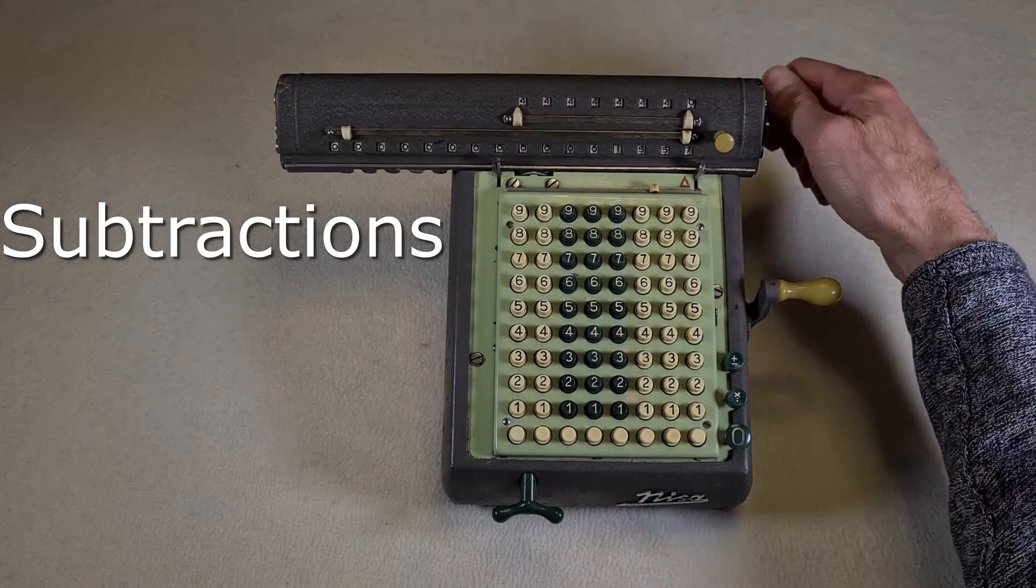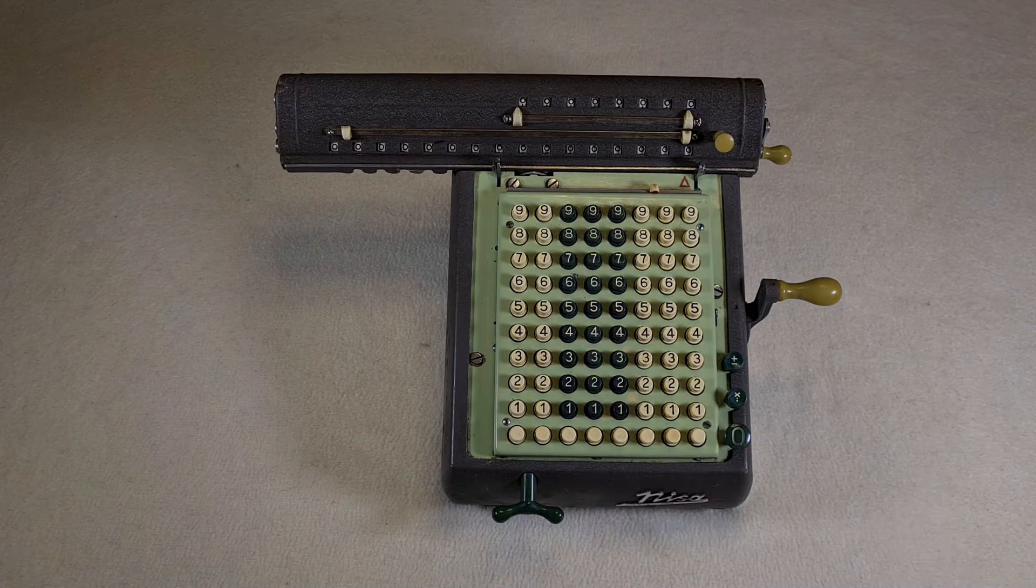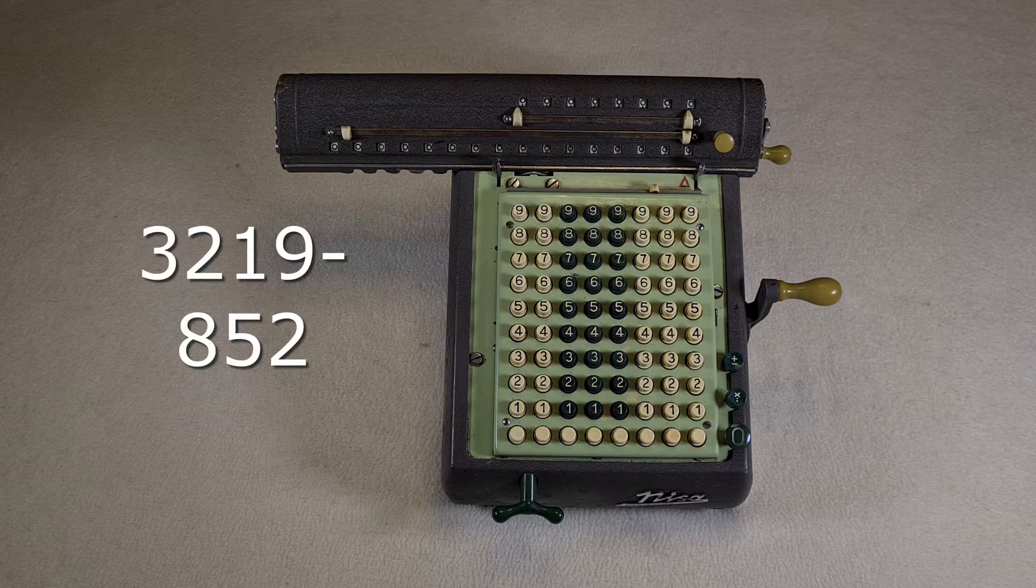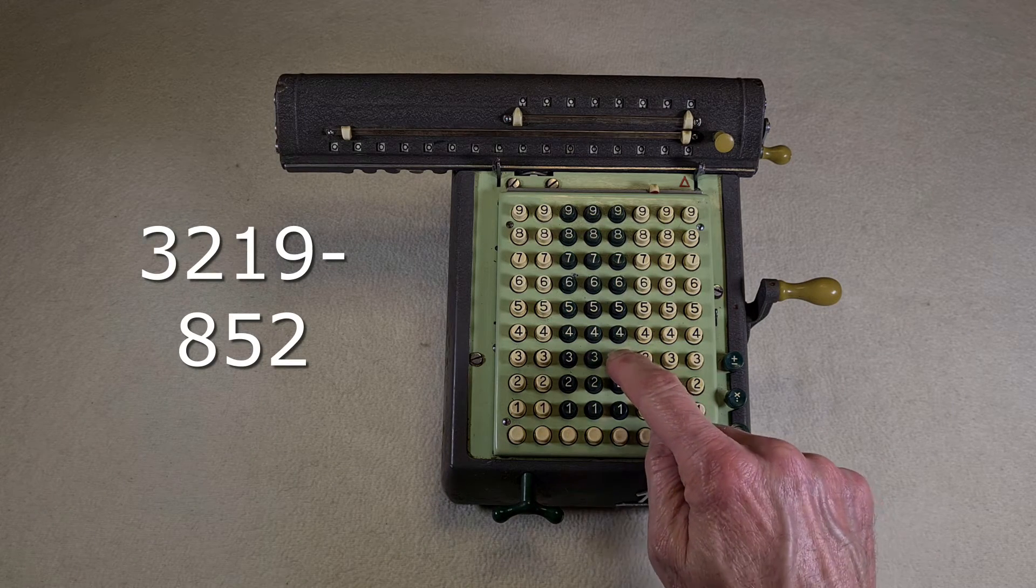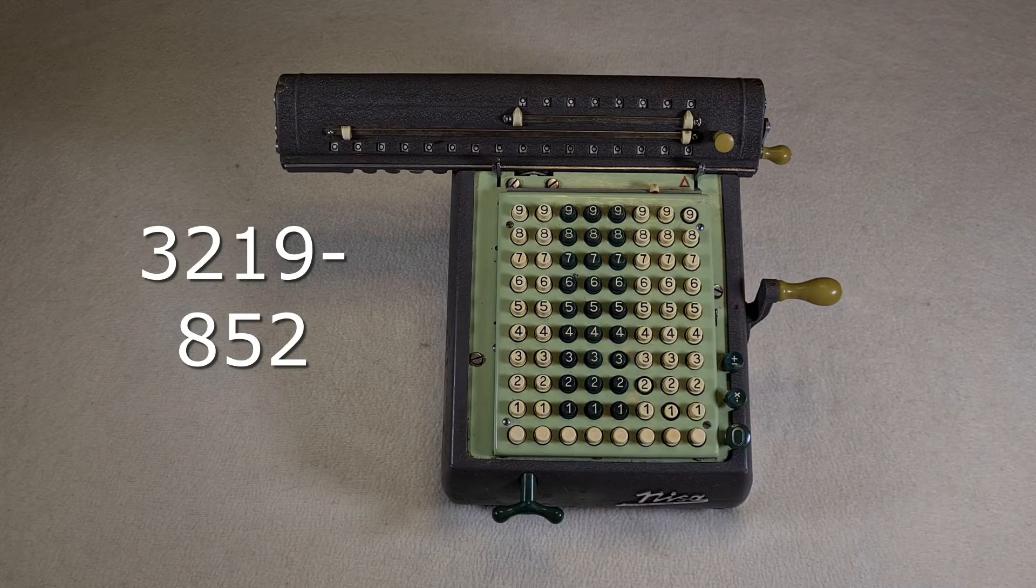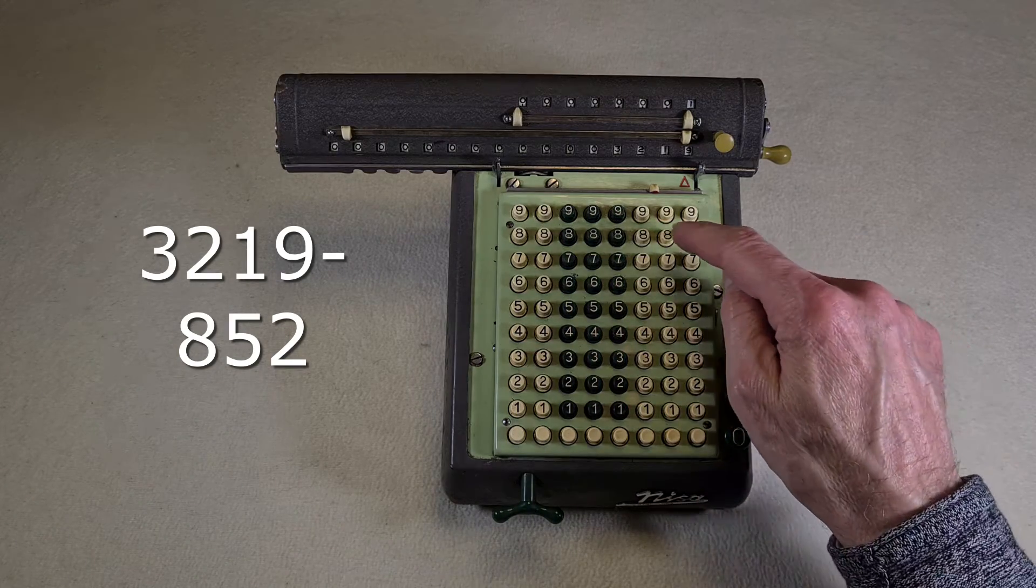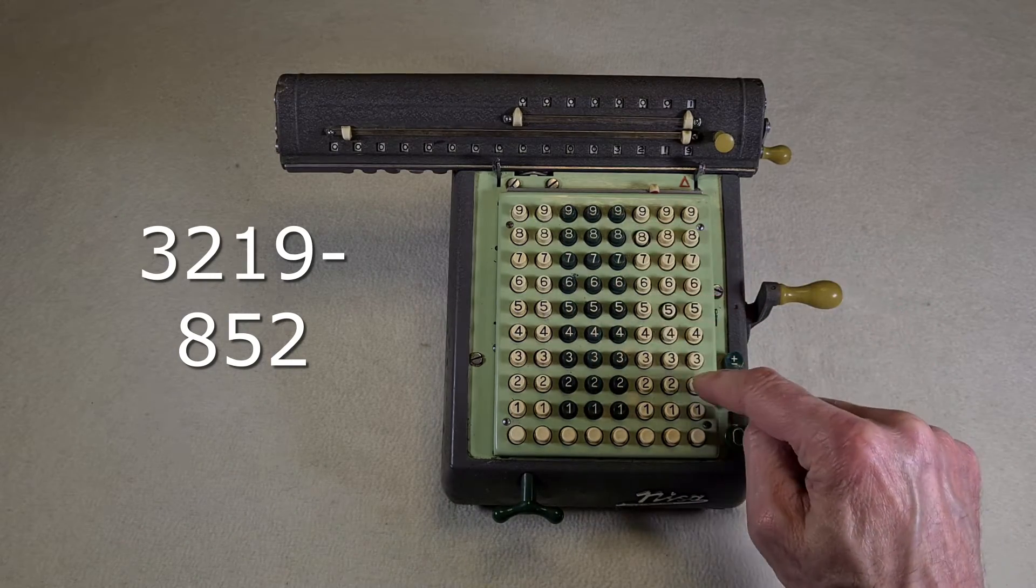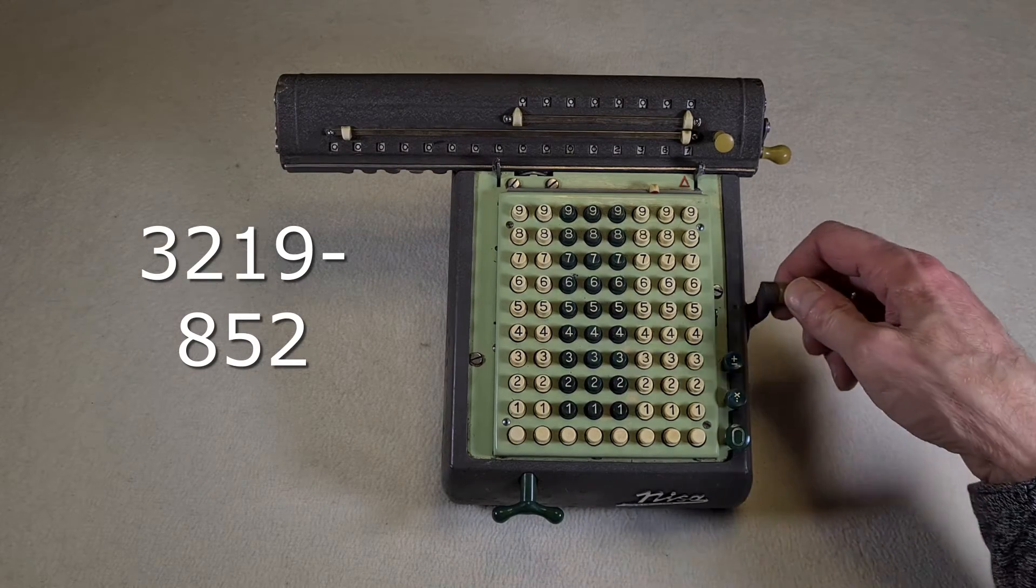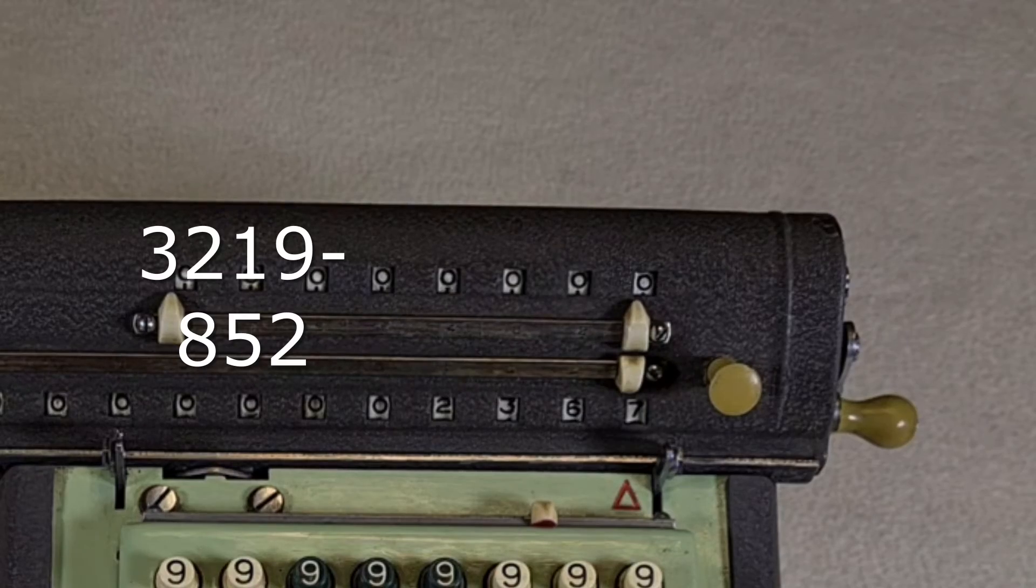Subtractions. I reset the display and counters. I set the button here for the subtractions. I set 3219 in the keyboard here, and I turn the crank clockwise. Then 852, and I turn the crank counterclockwise. Here is the result, 2367.